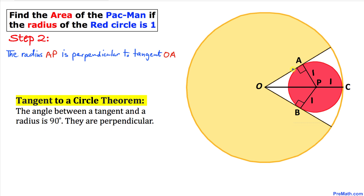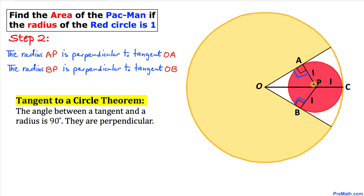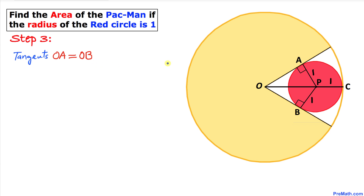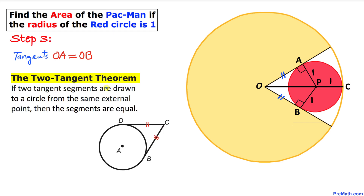Likewise, radius BP is perpendicular to tangent line OB, so that angle is also a right angle. Now, tangent lines OA and OB are equal according to the two-tangent theorem: if two tangent segments are drawn to a circle from the same external point, the segments are equal. So line segment OA equals OB.